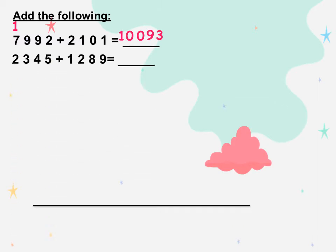The next one: 2,345 plus 1,289. Ones with ones: 5 plus 9 equals 14, so we will write 4 and carry up 1. 1 plus 4 equals 5. 5 plus 8 equals 13, so we will write 3 and carry up 1. 1 plus 3 equals 4. 4 plus 2 equals 6. 2 plus 1 equals 3. So the result is 3,634.